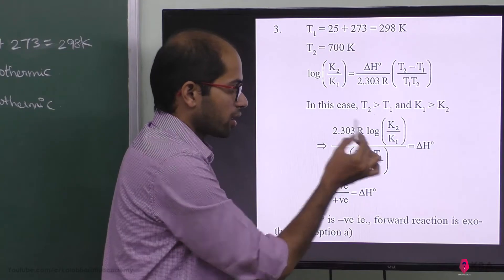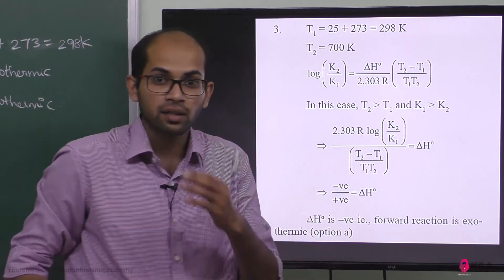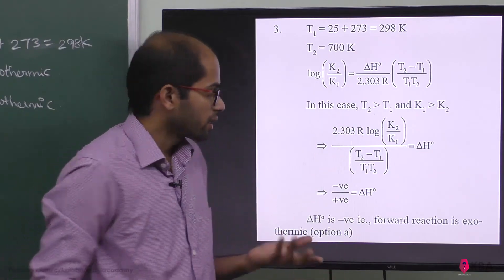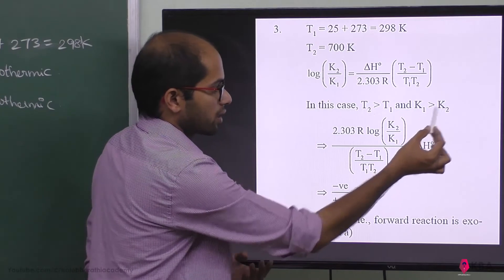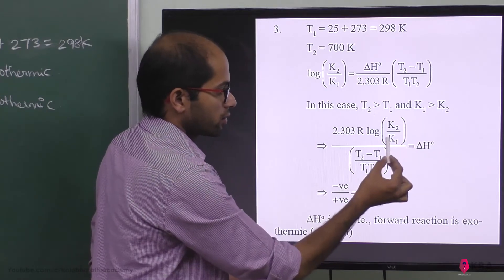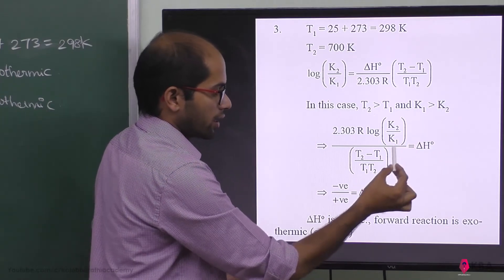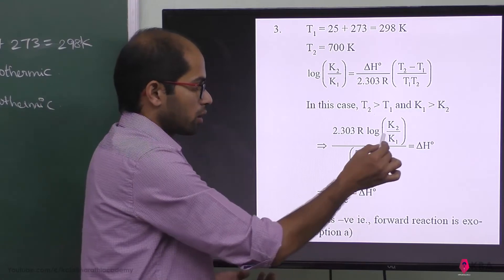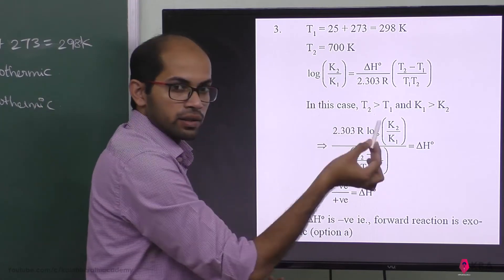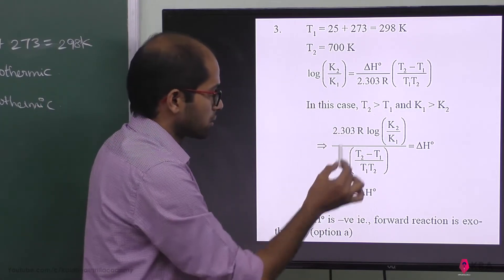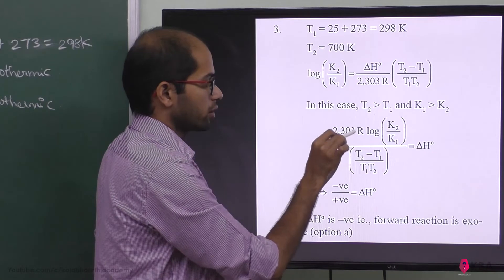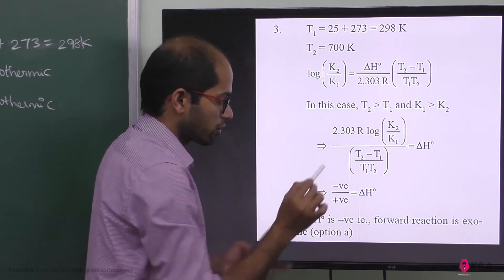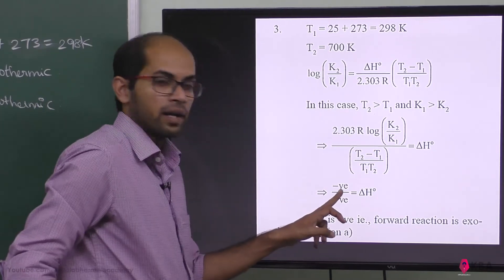The answer for log(K2/K1) is negative because K1 is greater than K2. With 2.303 times gas constant R multiplied by this negative numerator, the entire expression yields a negative delta H.